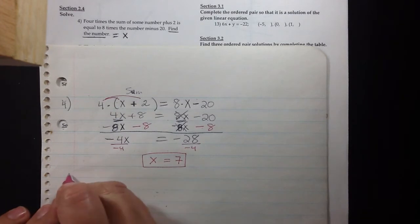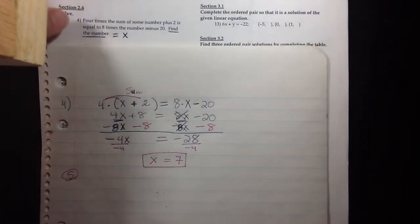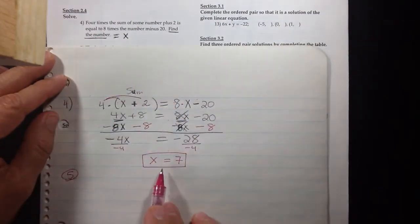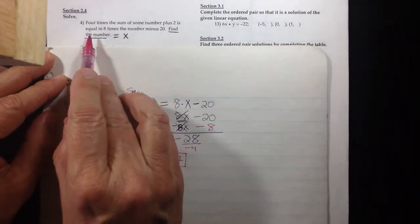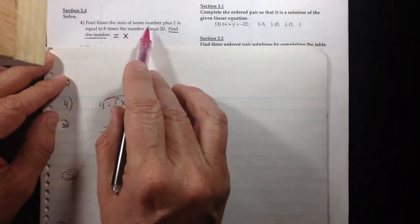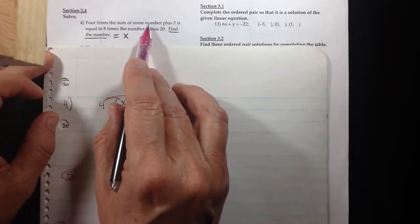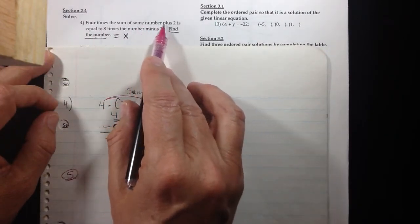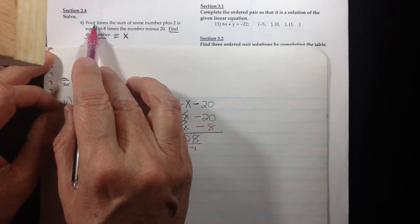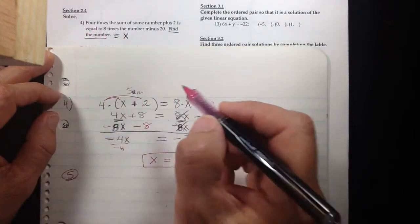The next story problem, and again if you had time you could go back, read the problem and fill in your answer of seven and see that it works. Four times the sum of some number, well now we know that seven plus two, well seven plus two is nine and four times that sum is thirty-six.